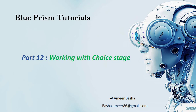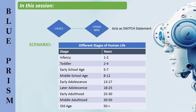Hi, welcome to Blue Prism tutorials. My name is Amir. This is part 12, working with the choice stage. In the previous session we learned how to work with the decision stage. The decision stage acts as an if statement, whereas the choice stage acts as a switch statement. The choice stage is like a set of decision stages — a list of possibilities with an action for each possibility and an optional otherwise action in case nothing evaluates to true.